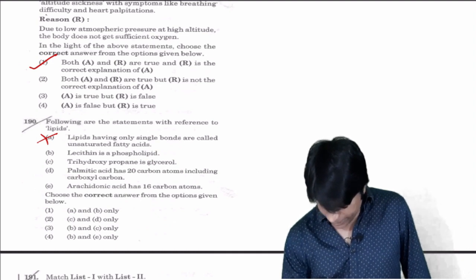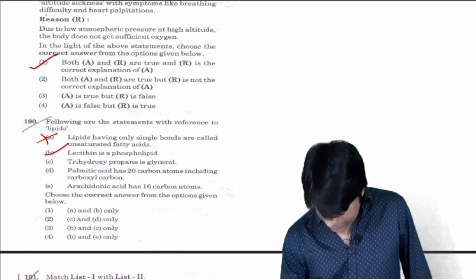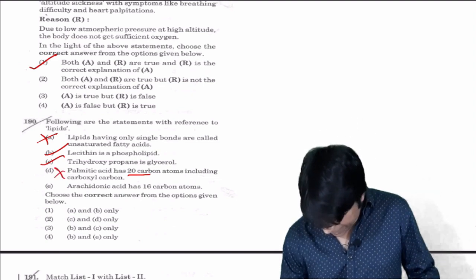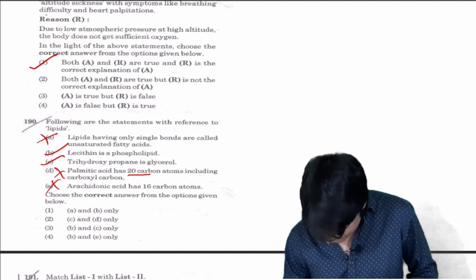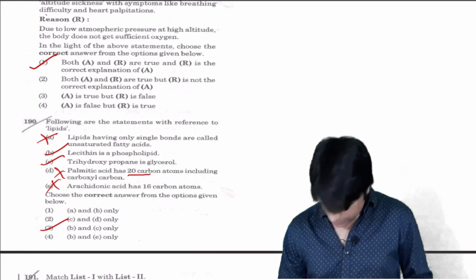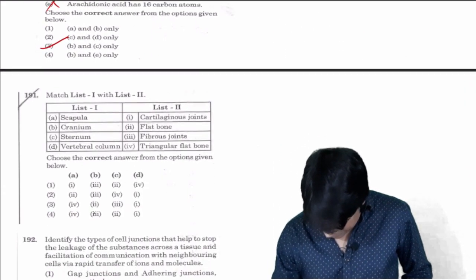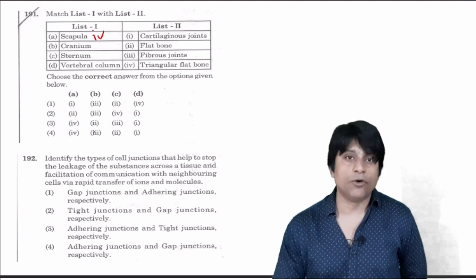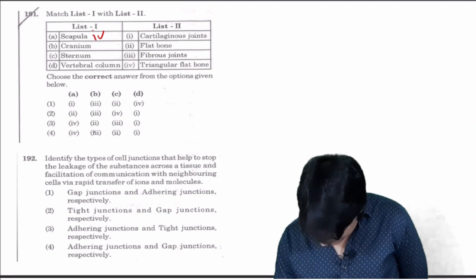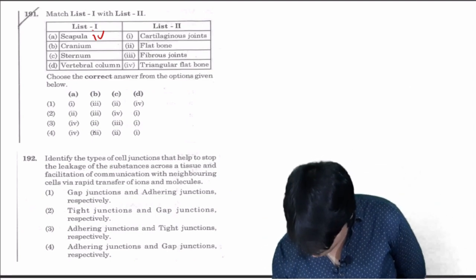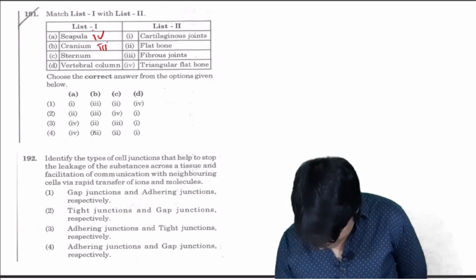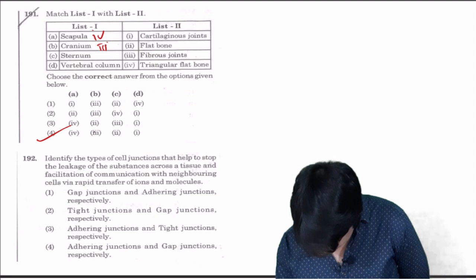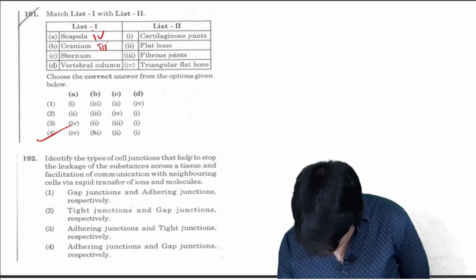Following are the statements with reference to lipids: Lipids having only single bonds are called unsaturated, wrong - without double bonds are saturated, with double bonds are unsaturated. Lecithin is a phospholipid, right. Trihydroxy propane is glycerol, correct. Palmitic acid has 20 carbons, this is wrong, it is 16. Only B and C are right, your answer is three. Scapula is a triangular flat bone, it is four. Cranium has all fibrous joints which are immobile, four and three. Sternum is flat bone, two is correct. With cartilaginous joints, one is correct. Answer is four.